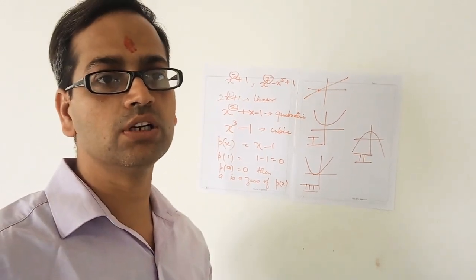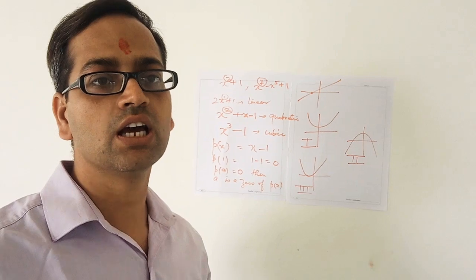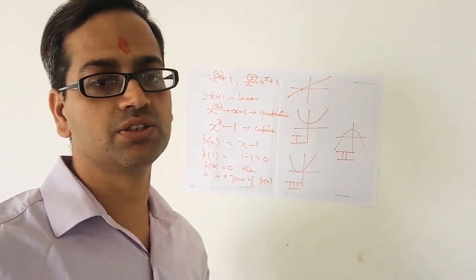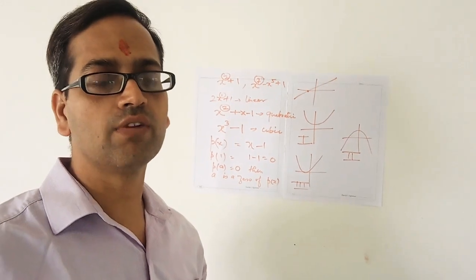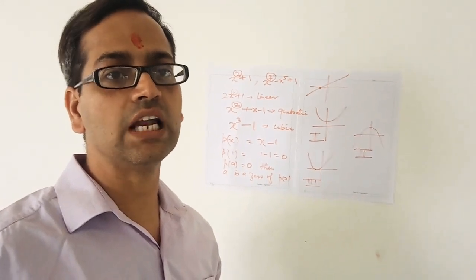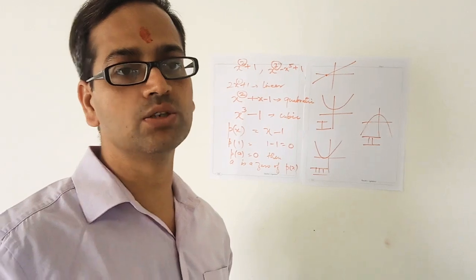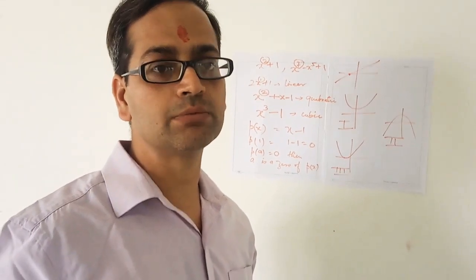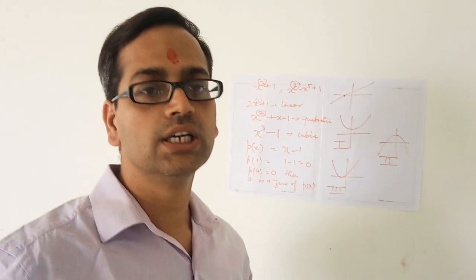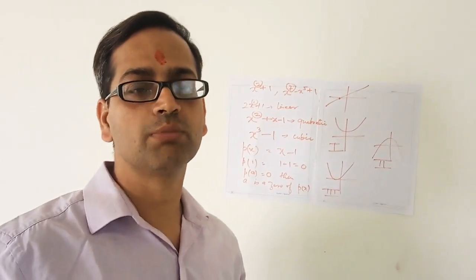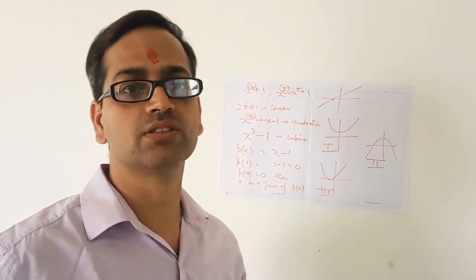From this we conclude that any polynomial in variable x of degree n has at most n zeros. It can have zero zeros, one zero, two zeros — at maximum n zeros. For example, a cubic polynomial may have no zeros, one zero, two zeros, or at maximum three zeros.